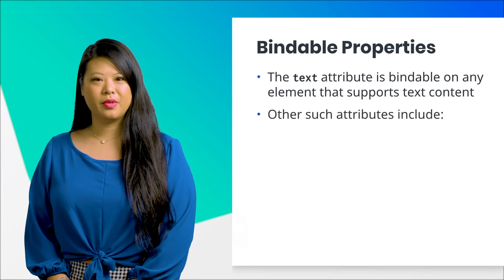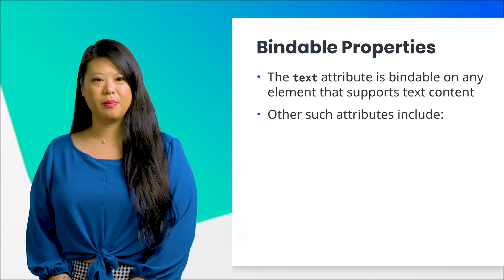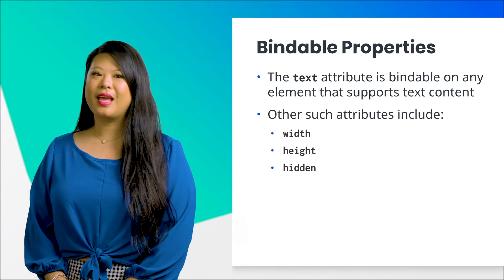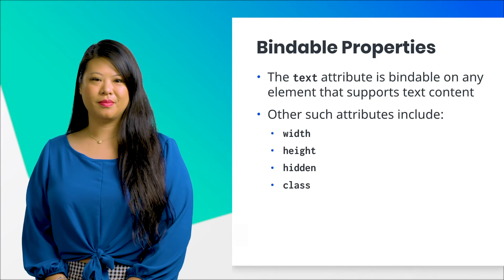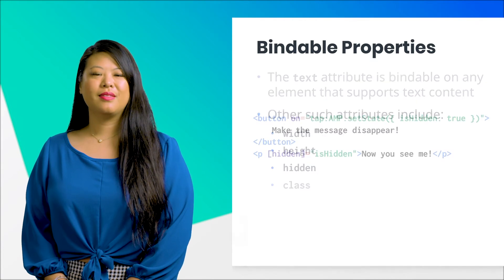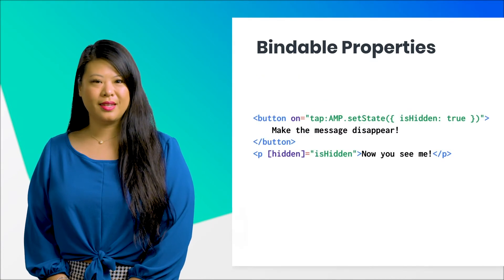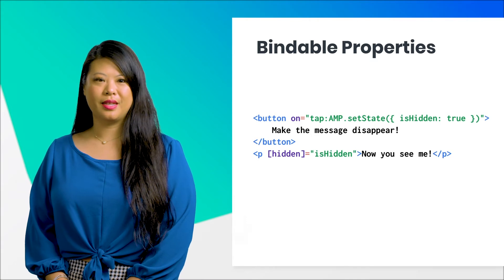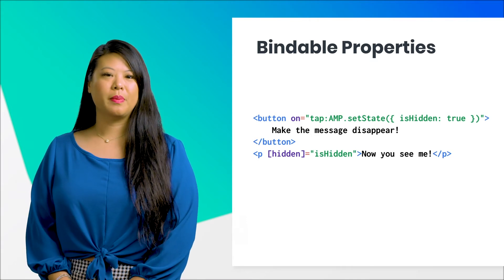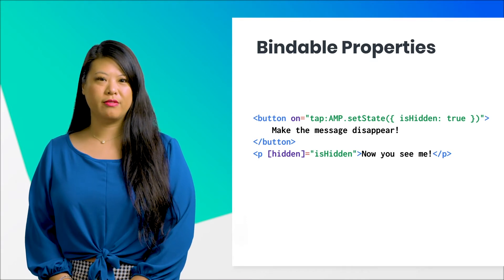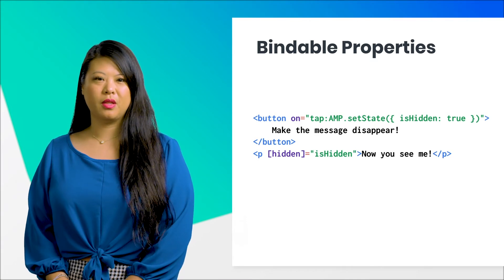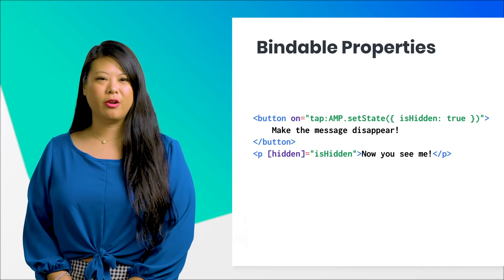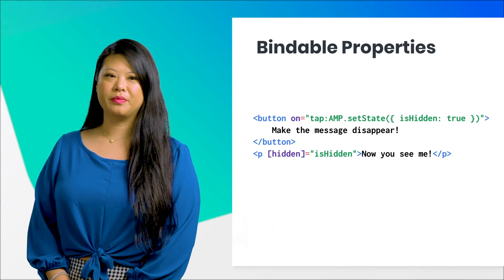The text attribute is bindable on any element or component that supports text content. Other examples of bindable attributes on all components are width, height, hidden, and class. In this example, the attribute hidden is bound to the state variable isHidden. When the page first loads, the paragraph tag is visible. However, when a user clicks the button, the paragraph tag disappears from the screen.